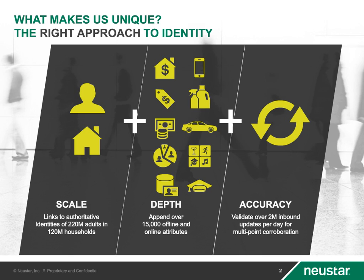That allows us to have a household or a consumer with an address tied to it, with an email address, a mobile phone, a landline phone, a cookie as well. The constant confirming that the linkages between all those identifiers go with the right person and the right household is the basis of the way that we view the United States. Since we are constantly confirming that target lock, we're starting from a very accurate foundation to build upon.